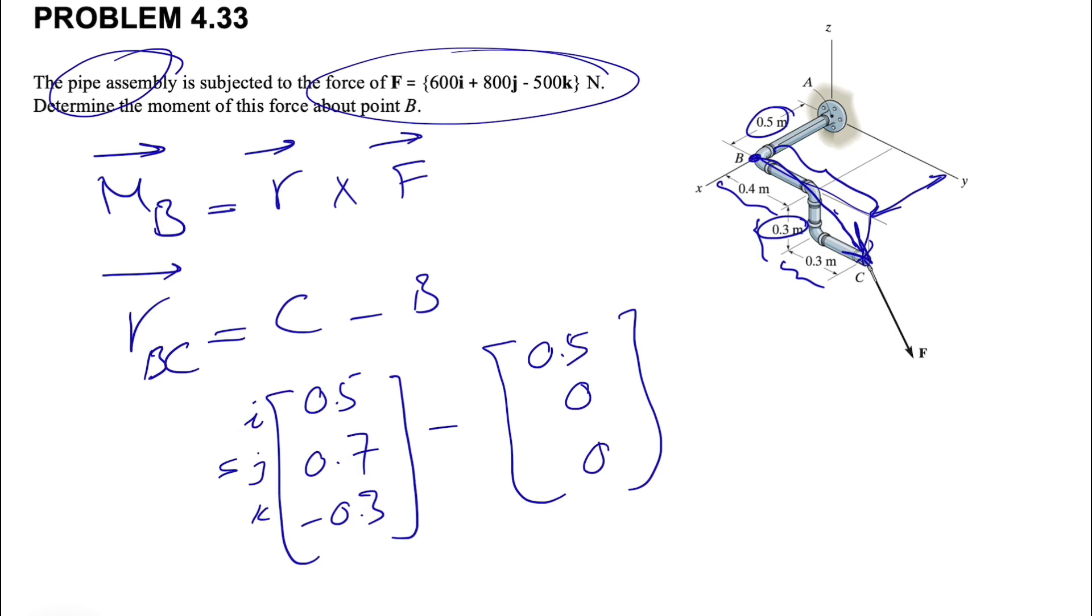And if you do that, we'll find, just going to subtract each of these two. And if you do that, we have 0.5 minus 0.5, which is 0 for I. We have 0.7 minus 0, which is 0.7 for J, and -0.3 for K.